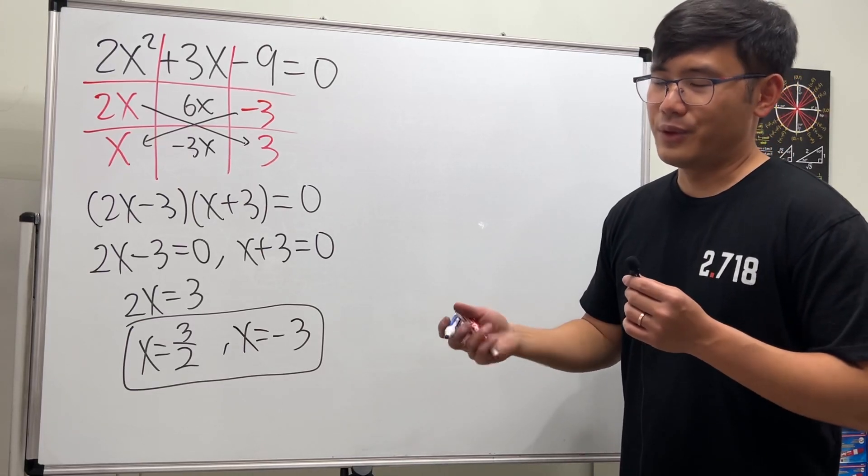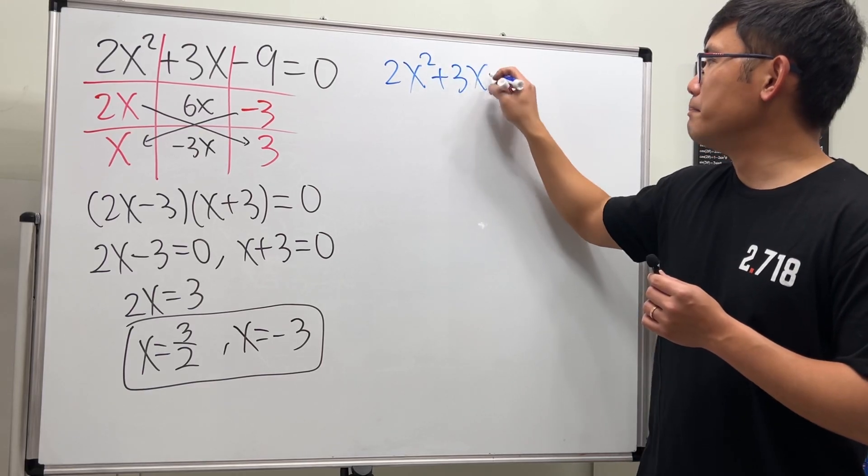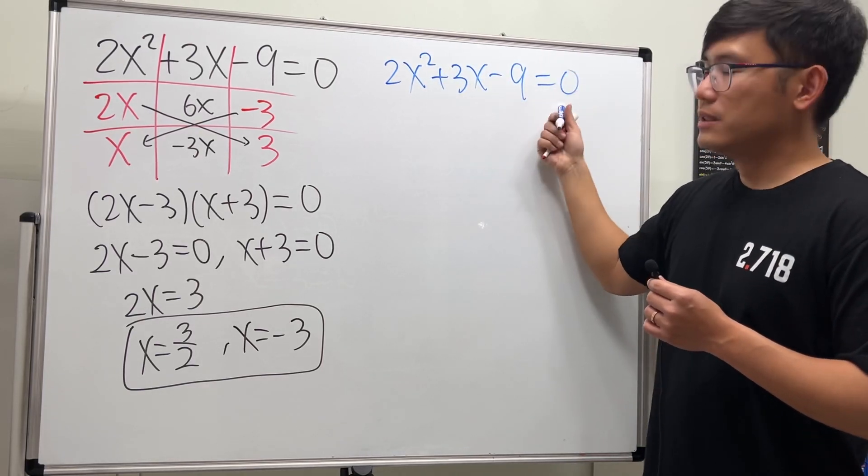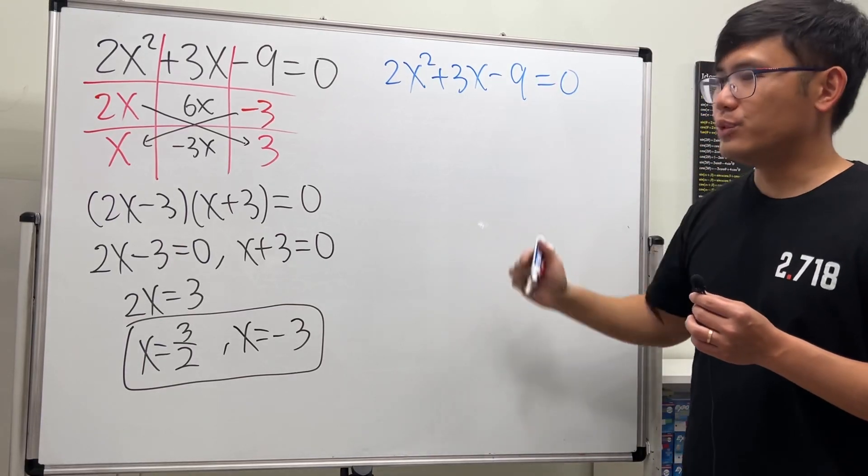However, some people might not like to factor because they don't like to guess and check, so let me just use the quadratic formula for you guys as well, right here. 2x squared plus 3x minus 9 equals zero, the quadratic equation in the standard form, one side equal to zero.